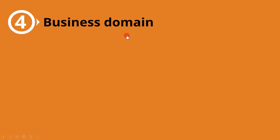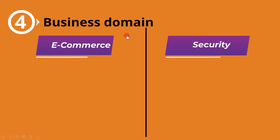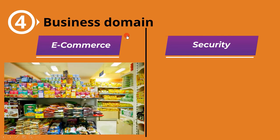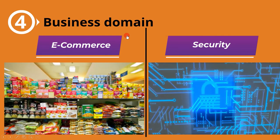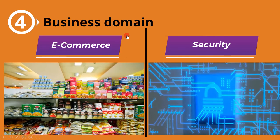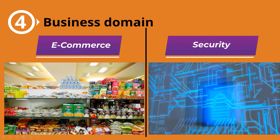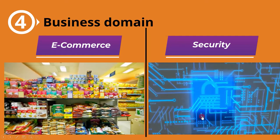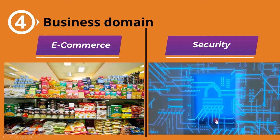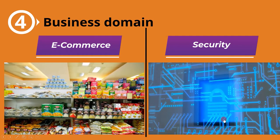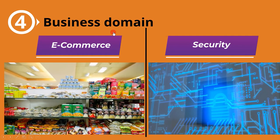The fourth context is the business domain, which is similar to the last context of product and project risk. To understand this, let's see two different domains: software for supermarket billing and software for banking. Supermarket software will be more focused on load testing, whereas banking software will be tested with more respect to safety aspects.